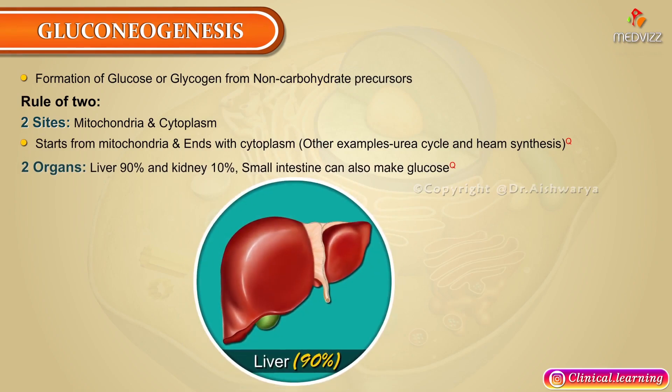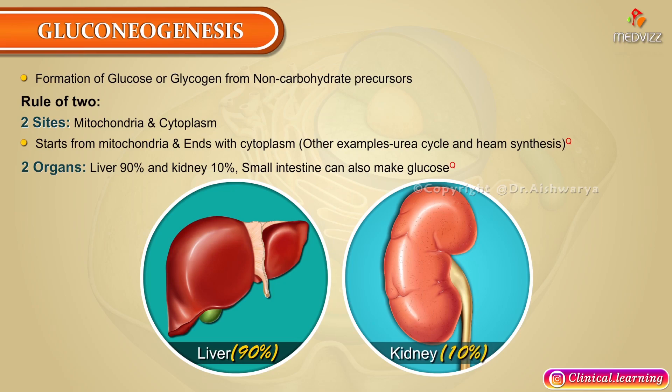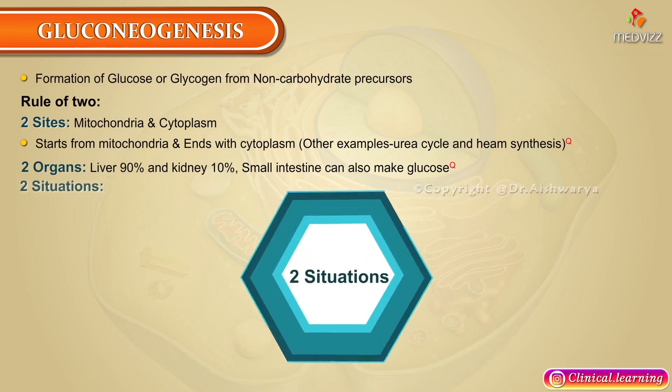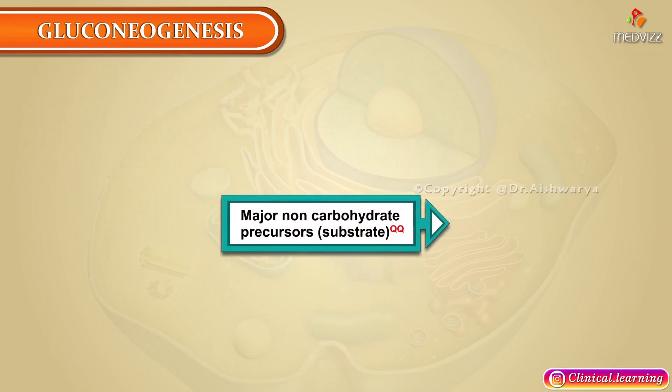Two organs: liver at 90 percent and kidneys at 10 percent. The small intestine can also make glucose. Two situations in which gluconeogenesis occurs: during fasting or starvation, and during diabetes mellitus.